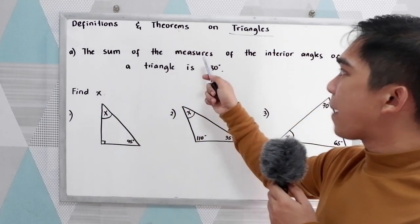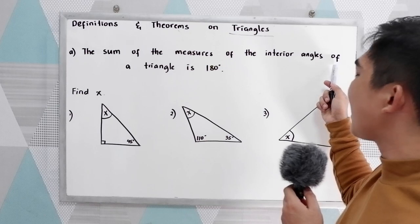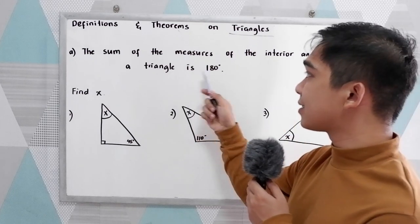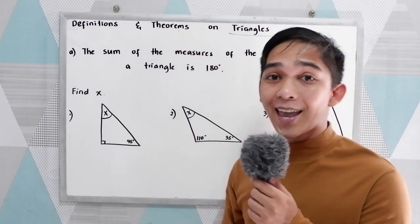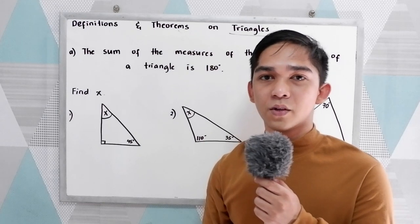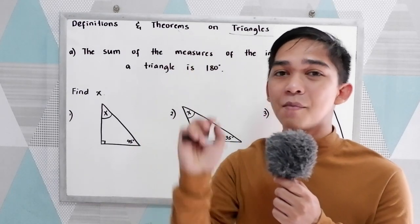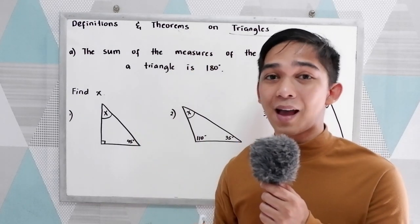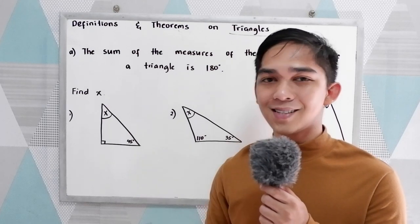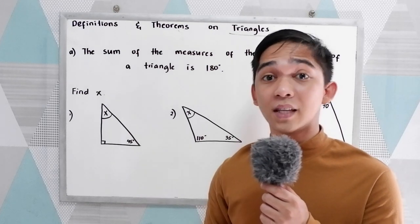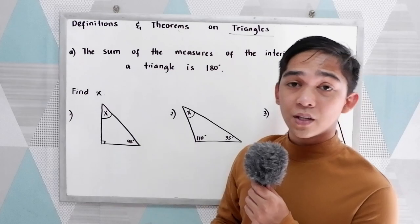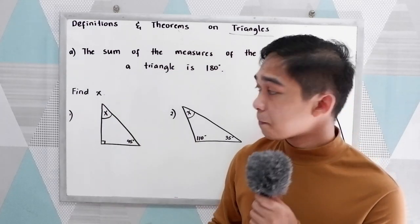The sum of the measures of the interior angles of a triangle is equal to 180 degrees. So, if you're going to get the sum total of the angles in a triangle, that is 180 degrees. Using the definition, let's solve for x.